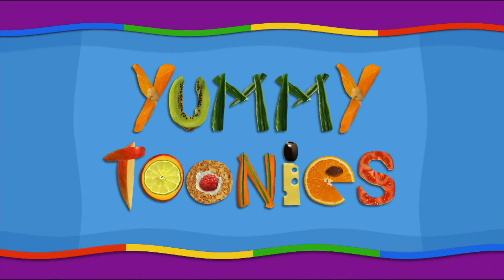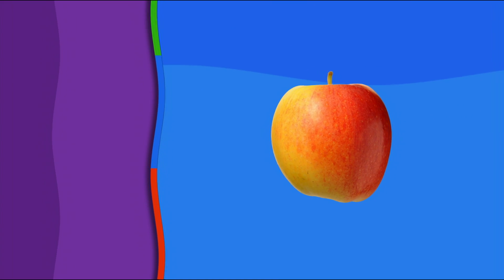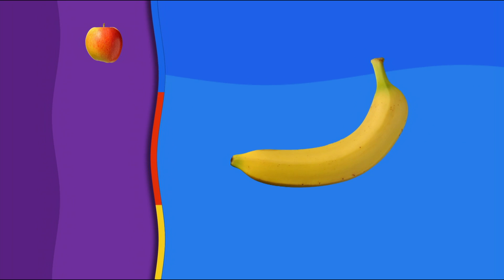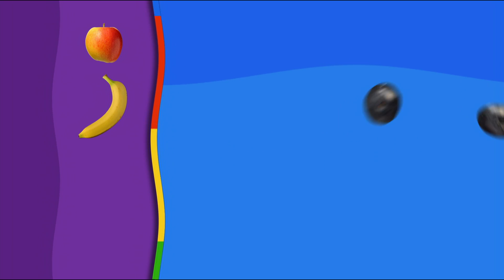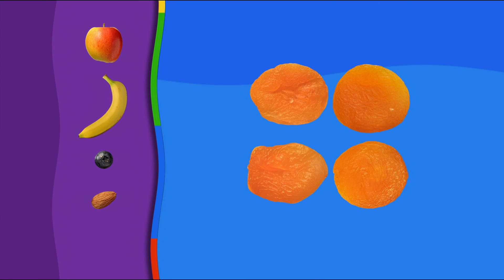Here's a delicious recipe for a funny yummy toonie: the baby penguin. For this recipe you need one apple, one banana, two blueberries, one almond, and four dried apricots.